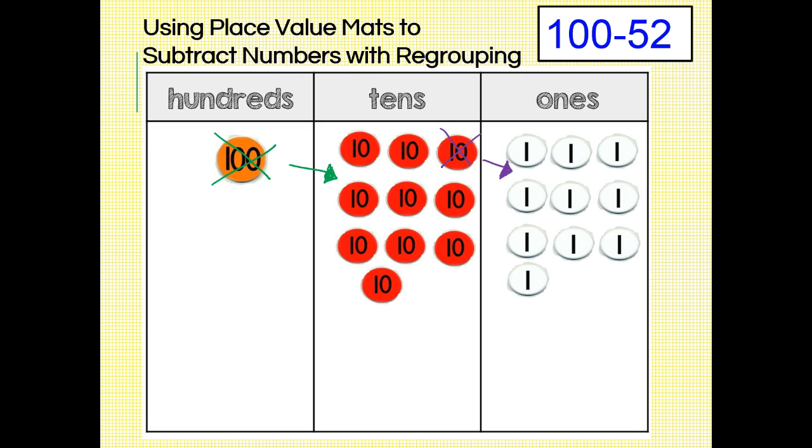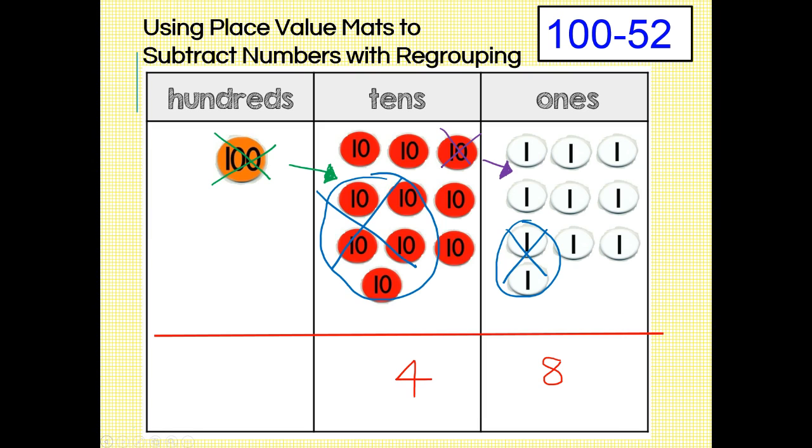Now we're ready to subtract our subtrahend of 52. We need to subtract five tens and two ones, so we are left with four tens and eight ones. One hundred minus 52 equals 48.